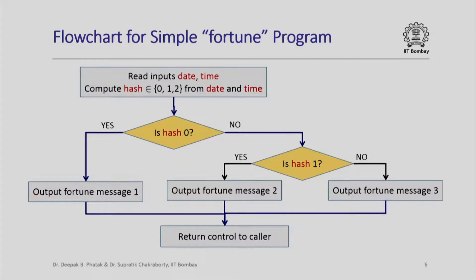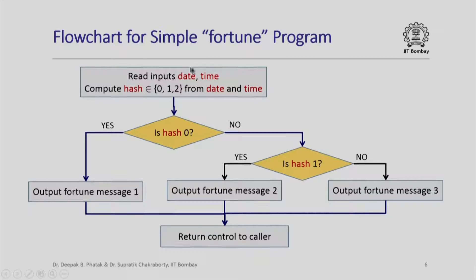Here is a simple flowchart for implementing a simple Fortune program. In this flowchart we first read inputs date and time as integers. Then we compute a hash, which is another integer, as a function of date and time such that as we change date and time the value of hash changes. But in any case the value of hash always stays within 0, 1, or 2. This is a many-to-one function — we will look at hash functions in more detail later in the course — but for now let us assume it is just a function of date and time taking values in the set {0, 1, 2}.